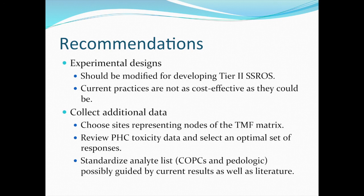We need to choose sites that represent nodes of the toxicity modifying factor matrix. For example, if you discretize pH into high, medium, and low, and discretize another modifying factor like organic matter into high, medium, and low, we need to go to sites that represent all the interstices of those two vectors to get good coverage of the range of combinations of toxicity modifying factors. We should also review the hydrocarbon toxicity data — ideally amalgamated into a database — to see which toxicity test responses are sensitive, consistent, and which are traditionally duds. Both Melissa and I had problems with the Eisenia data.